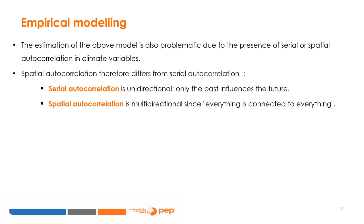The estimation of the above model is also problematic due to the presence of serial or spatial autocorrelation in climate variables. It should be noted that spatial autocorrelation differs from serial autocorrelation. Serial autocorrelation is unidirectional because only the past influences the future. On the other hand, spatial autocorrelation is multidirectional since everything is connected to everything.